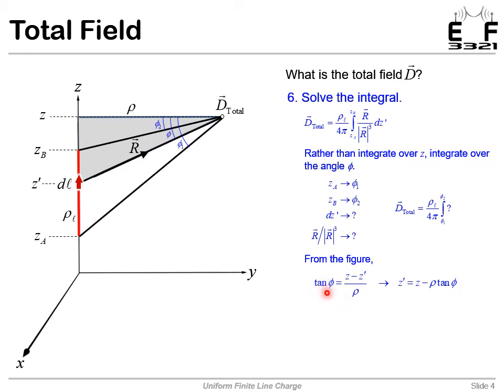Another thing we can do is solve this equation for Z prime. And why are we doing that? Because we want to differentiate that to get an expression for Z prime in terms of D phi. So that's our next step. We're differentiating this equation. And we just end up with DZ prime equals minus rho secant squared phi D phi. Now we've related D phi to DZ. So we can put that back into our integral to put everything in terms of phi.